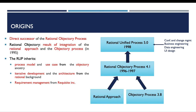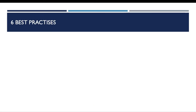It also inherits requirement management from the Requisite incorporation and a detailed test process from SQA incorporation. Both Requisite and SQA incorporation were acquired by the Rational Software Company. The Rational Unified Process is very well known for its six best practices.